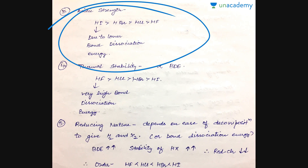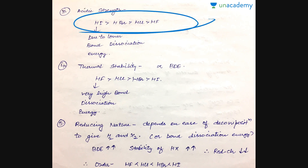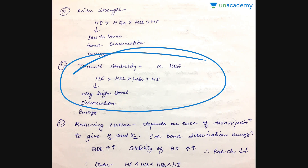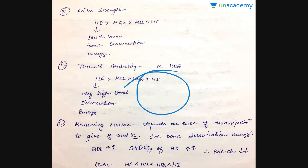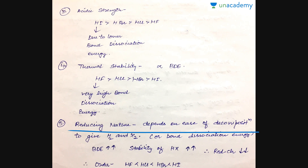Regarding acidic strength, as we move down the group, bond dissociation energy decreases because of the mismatch between the small proton and the increasingly larger halide anion, making the release of protons much easier. Therefore HI is the most acidic while HF is the least acidic. As for thermal stability, it is directly proportional to bond dissociation energy — since bond dissociation energy decreases down the group, thermal stability also decreases, so HF is most stable and HI is least stable.